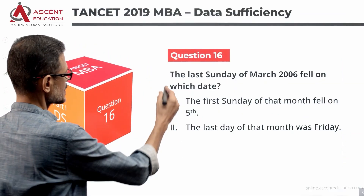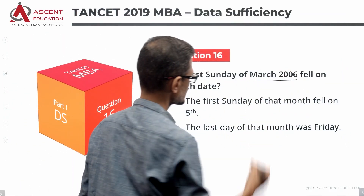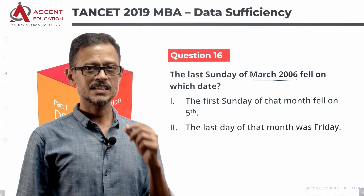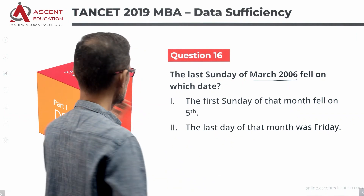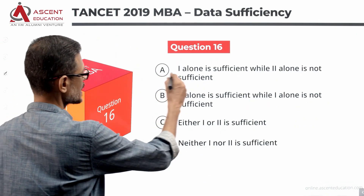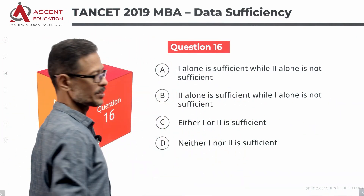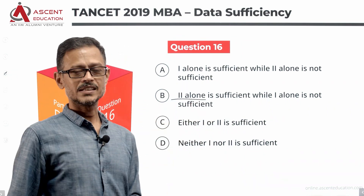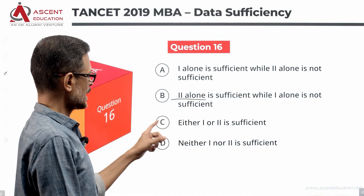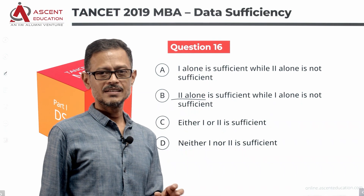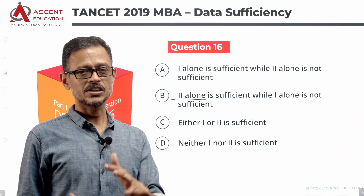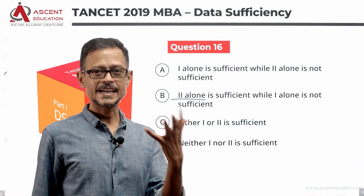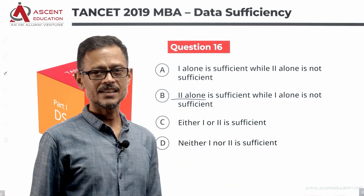The question is: the last Sunday of March 2006 fell on which date? Let's take a look at the four answer options. Option A: Statement one alone is sufficient, two is not. Option B: Statement two alone is sufficient, one is not. Option C: Either one or two alone is sufficient — any single statement is sufficient. Option D: Neither one nor two is sufficient — the data is not enough.